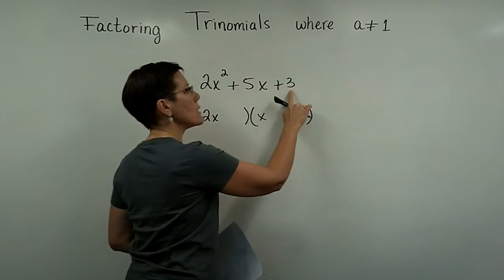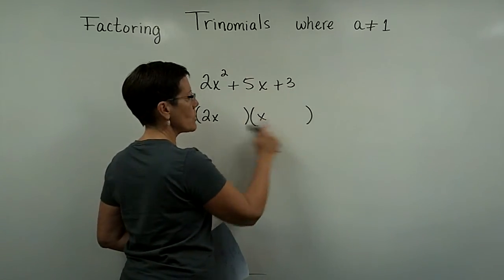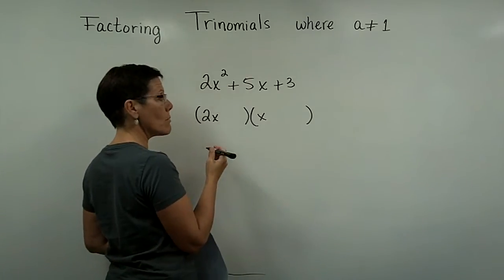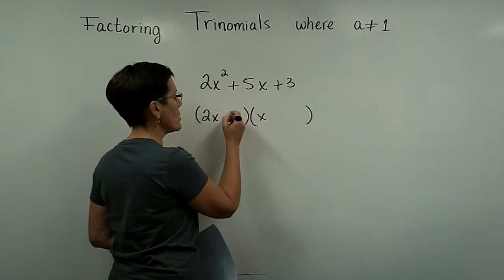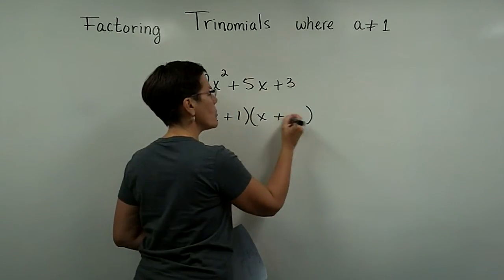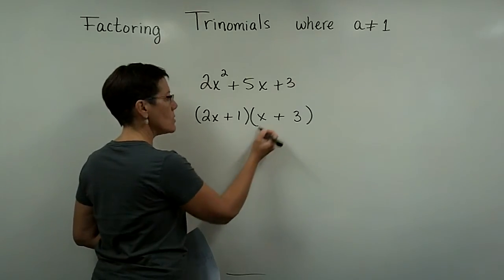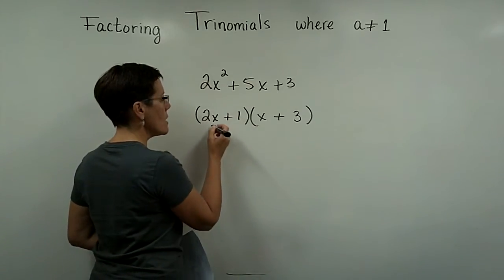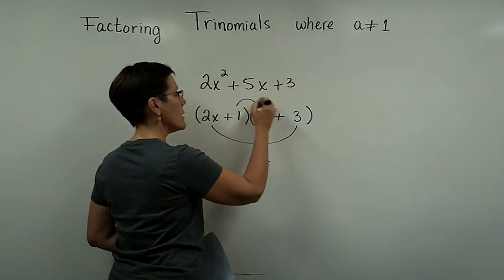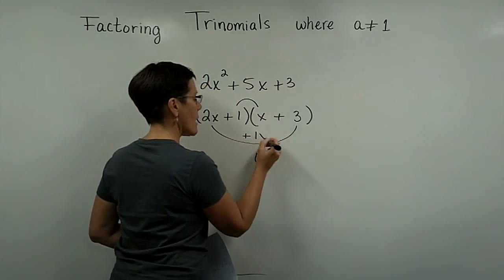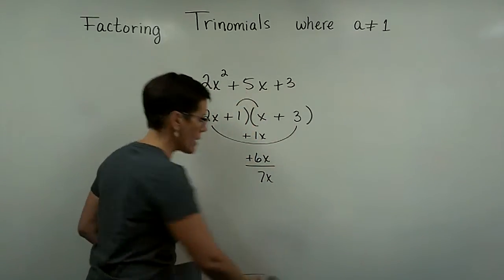And many of us would look at this and say, when I foil this out to check it, I need to have two numbers right here that multiply to be 3. And so some of us might just try some options. You might put a 1 here and you might put a 3 here. This is guessing and checking. But when you foil this, yes, you do get the 2x squared. But right here you get a 6x and right here you get a 1x. And those two like terms add to be 7x. They don't add to be 5x.